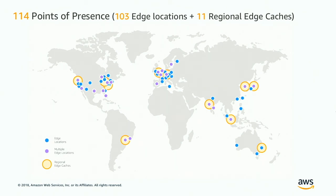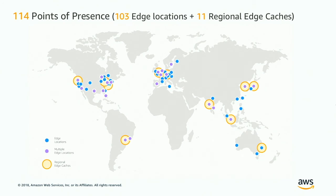Looking at the CloudFront architecture, there are two types to mention. First are the edge locations — the purple and blue dots — which provide the first line of caching for your hottest and most requested content. The second type is the regional edge cache, which serves as another caching layer sitting between the edge location and your origin — a mid-tier caching layer. This increases your overall cache hit ratio, allowing CloudFront to respond to viewer requests with the content they're asking for, reducing the overall workload on your origins.